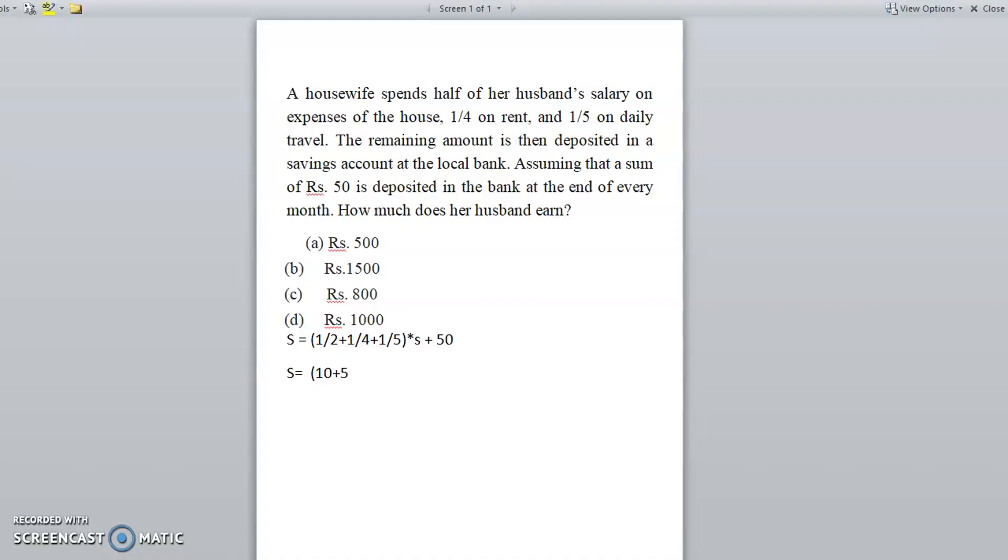So this divided by 20 again, multiplied by S, plus 50. Now this 10 plus 5 plus 4 will become 19 by 20S plus 50.